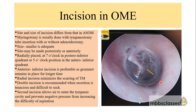When draining fluid in cases of otitis media with effusion, the first incision is used with the aim to insert the grommet. The second incision is recommended when secretions are very tenacious and difficult to suction. When the second incision is made, it allows air to enter the tympanic cavity and prevents negative pressure from increasing the difficulty of aspiration.